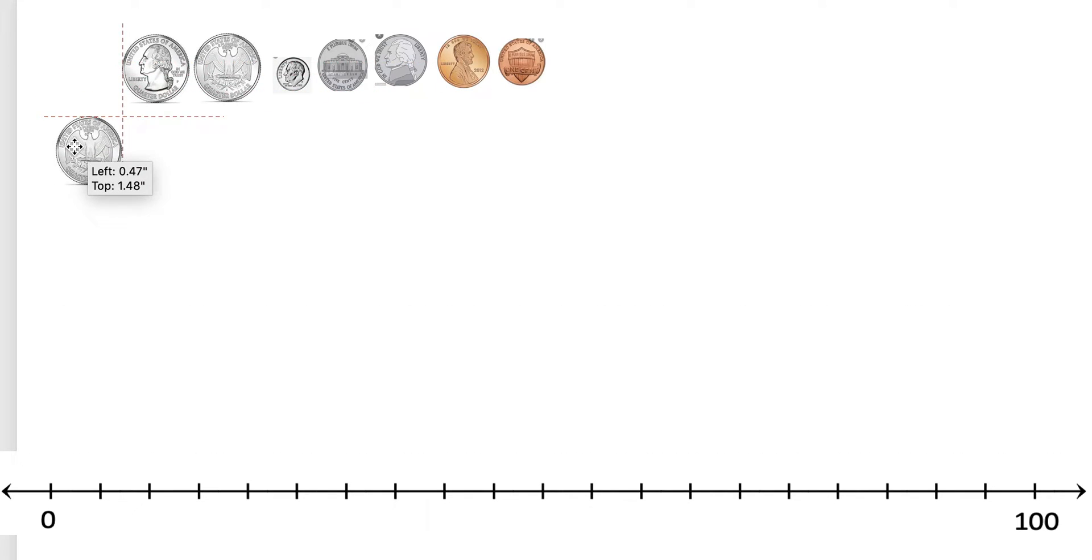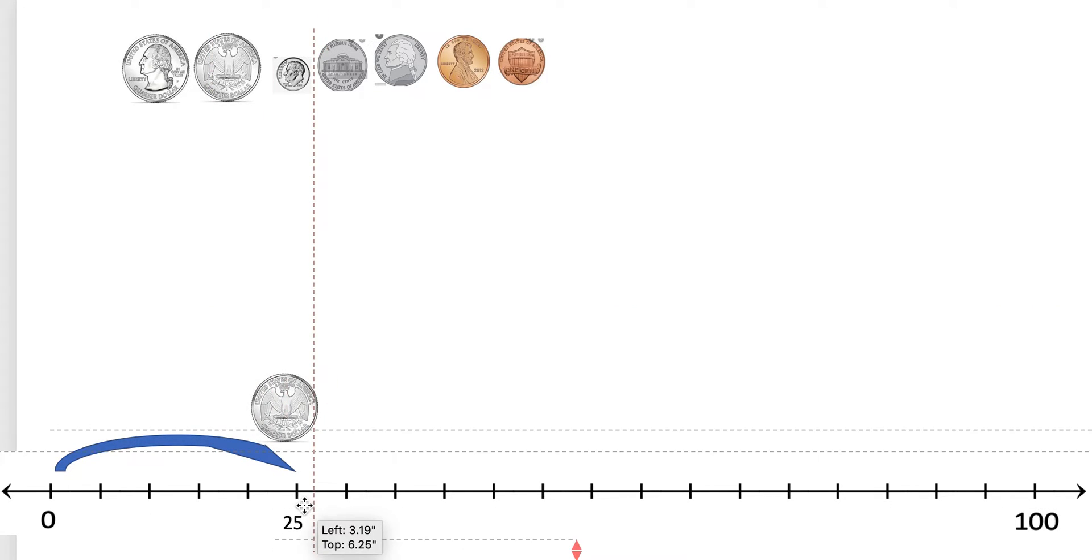And I know this is worth 25. So the first thing I'm going to do is I'm going to make one big hop from zero to 25 because I know this quarter is worth 25. And then I'm going to put my quarter right here and I'm going to write 25 on my tick mark underneath.